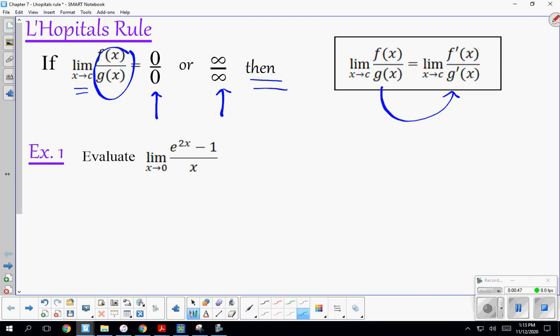We still always try direct substitution, just like before. When we plug in 0 here, we're going to get e^(2×0) - 1 all over 0.